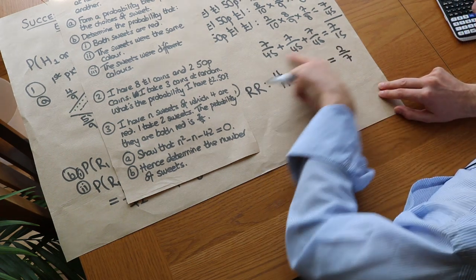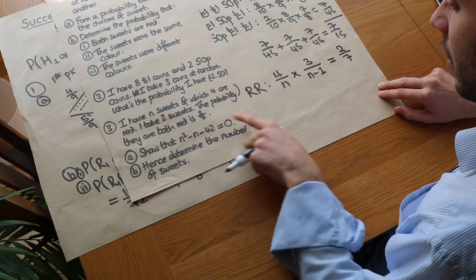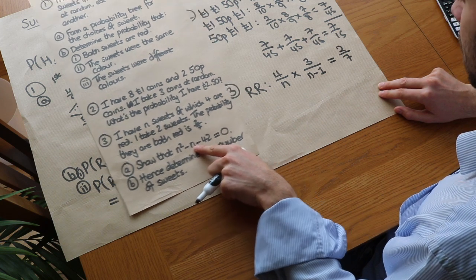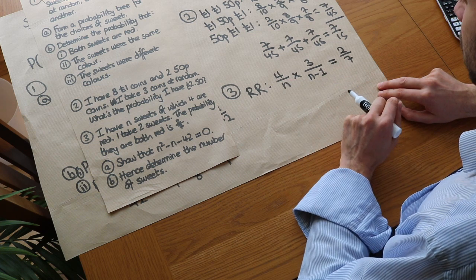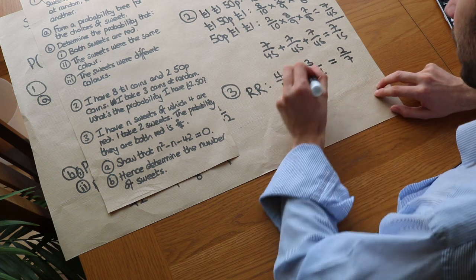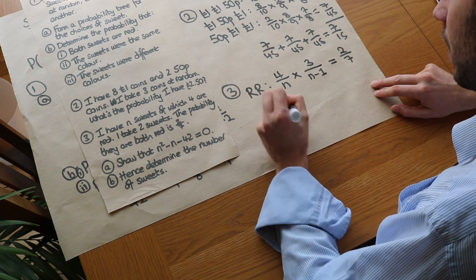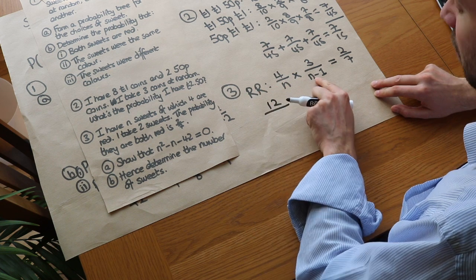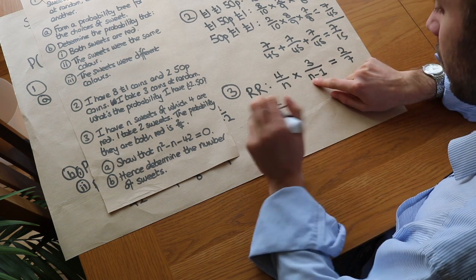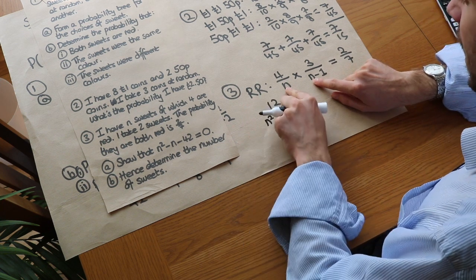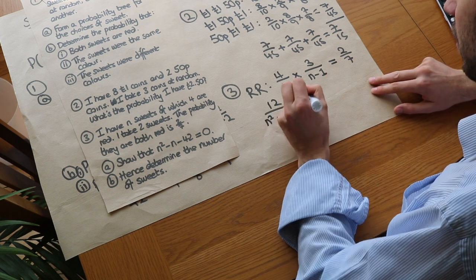We now have an equation to simplify. Combining the left-hand side: 12 over n(n − 1), which expands to 12 over (n² − n), equals 2 sevenths.